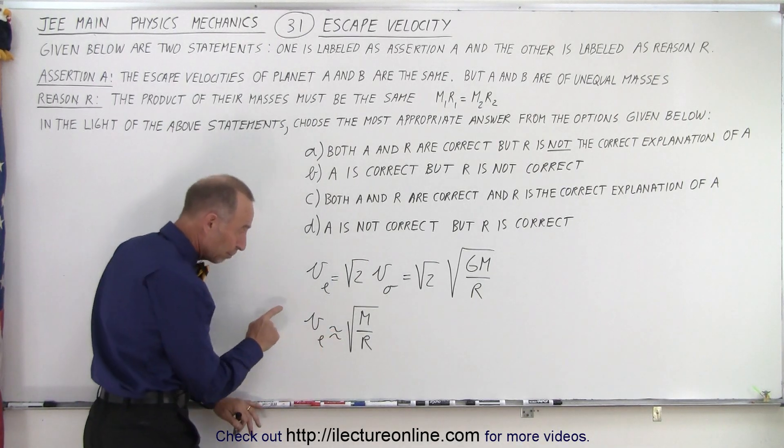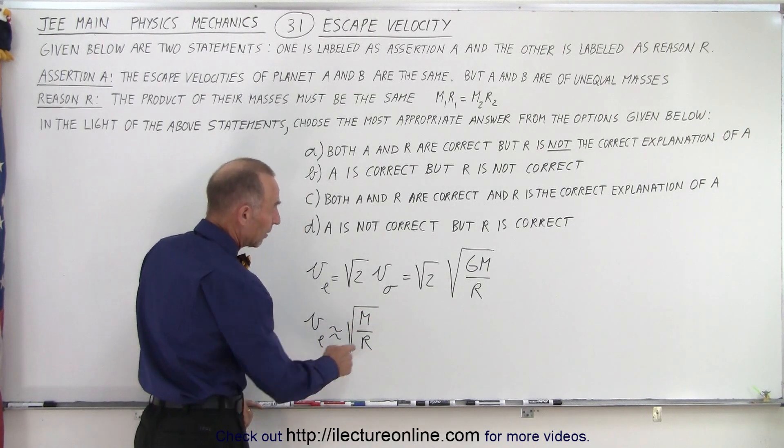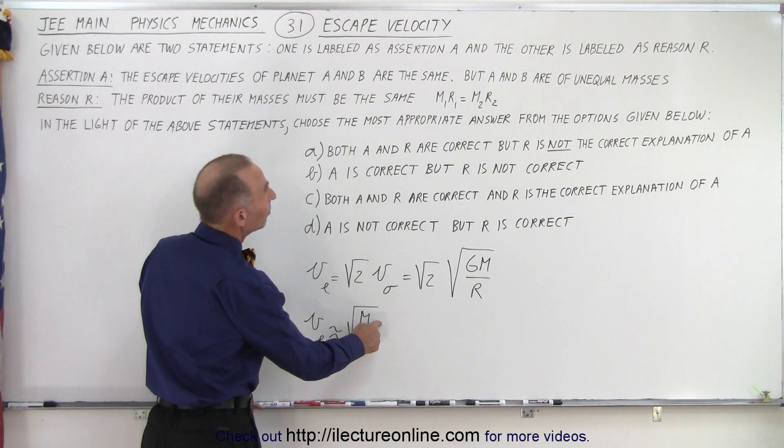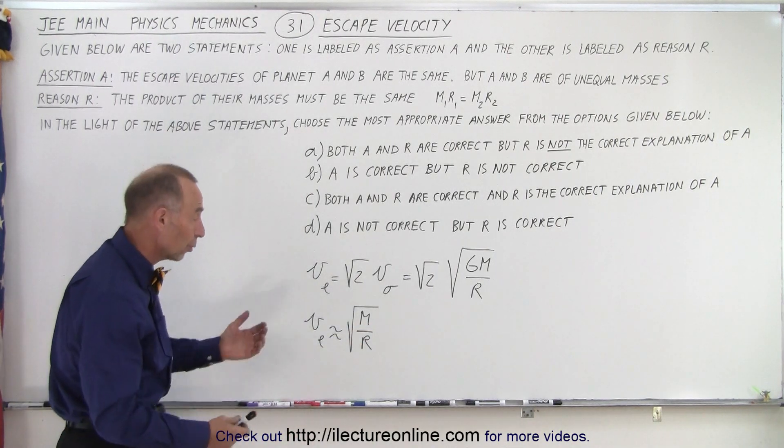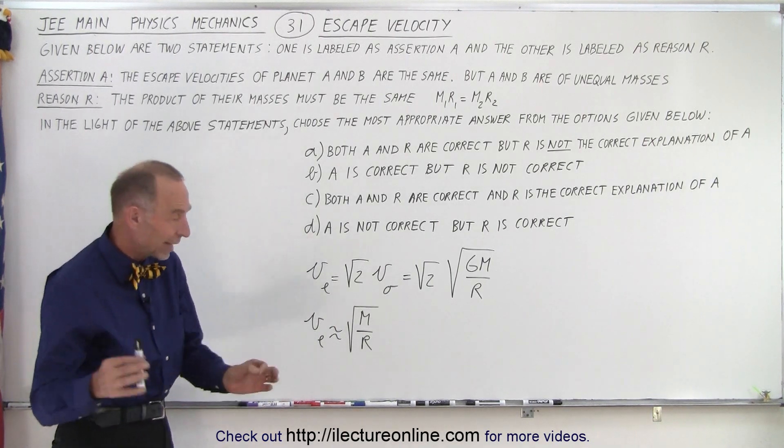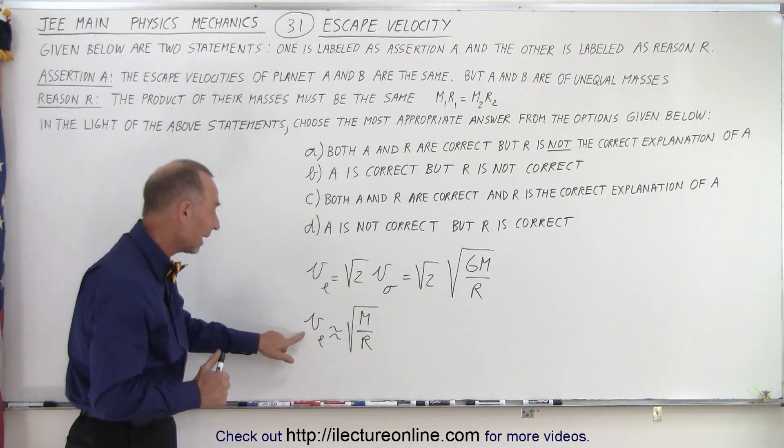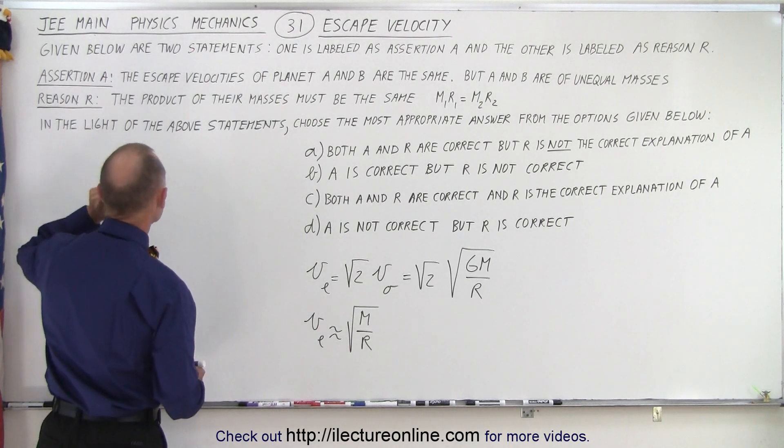And the answer is yes, because it depends on both the mass and the radius. If the masses are not the same, then that can be made up by the fact that the radius don't have to be the same either. With the proper combination of mass and radius, you could have two planets with unequal mass that have the same escape velocity. So, we can say that assertion A must be correct.